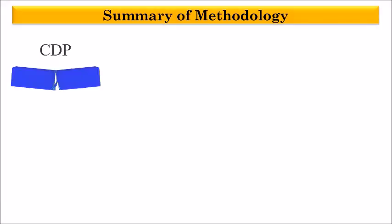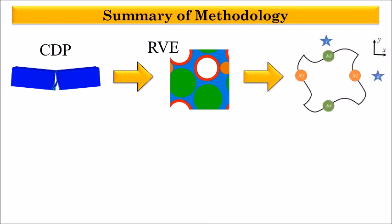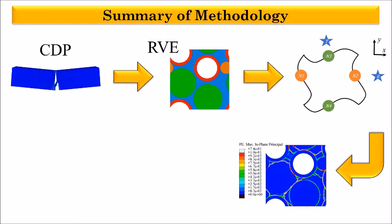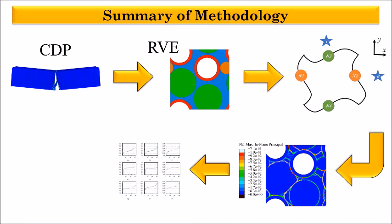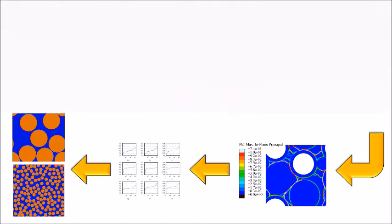We start by developing concrete damage plasticity or CDP model in Abaqus. Then this material model is applied to the representative volume element or RVE of the microstructure of the three refractory composite types. Next, thermomechanical boundary conditions are applied to the RVE and after running finite element simulations, predictions of this model are analyzed and compared to experimental findings. Finally, using the same technique, the effect of volume fraction and size distribution of the inclusions is investigated.